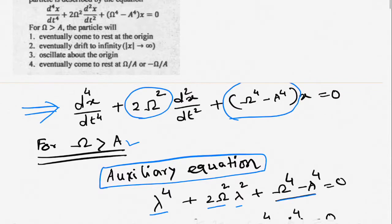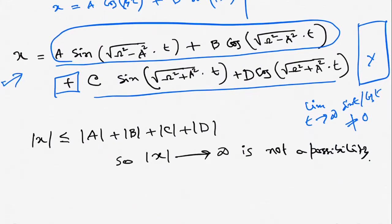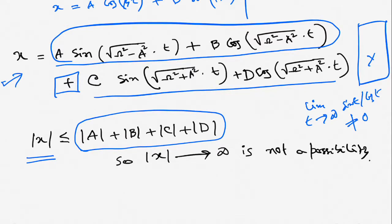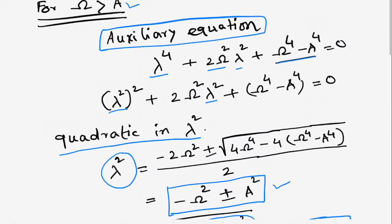'Eventually drift to infinity' means mod x → ∞. Whether x goes to infinity as t → ∞ is not the case either, since sin and cos have no limit. Furthermore, mod x ≤ |A| + |B| + |C| + |D|, because |sin| and |cos| are always ≤ 1. Therefore, mod x is always bounded by |A| + |B| + |C| + |D|, and since a, b, c, d are fixed constants, mod x cannot go to infinity. So mod x → ∞ is not a possibility and the second option is not correct.